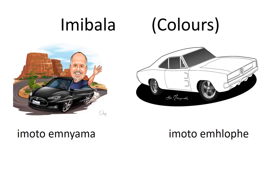Opposites also come from imibala — colors. As you can see, there is a black car on your left hand side and a white car on your right hand side. So the two opposite colors are omnyama (black) and omlope (white).